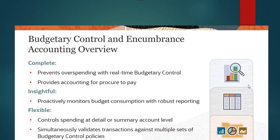You have choices as to how you want to control your spending, with validations of transactions against multiple sets of budgetary control policies. You can have a number of control budgets set up, and your transactions — where applicable — will be validated against each of those budgets. Budgetary control and encumbrance accounting features are most commonly implemented by public sector organizations to ensure expenditure is fully controlled against budget to prevent any overspend.